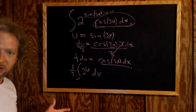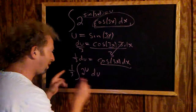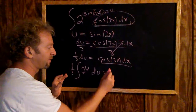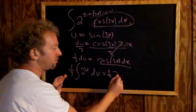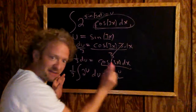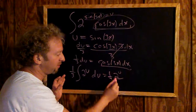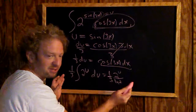Now there's a formula. When you integrate 2 to the u, where the 1/3 hangs out, it'll be 2 to the u divided by the natural log of 2. That's the formula, and then plus a constant.